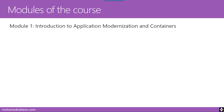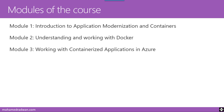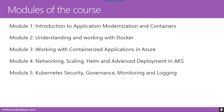The five modules are: Module 1 — Introduction to Application Modernization and Containers; Module 2 — Understanding and Working with Docker; Module 3 — Working with Containerized Applications in Azure; Module 4 — Networking, Scaling, Helm, and Advanced Deployment in AKS; and Module 5 — Kubernetes Security, Governance, Monitoring, and Logging.